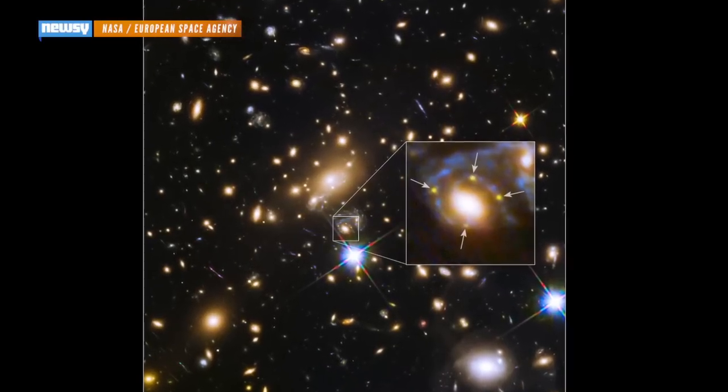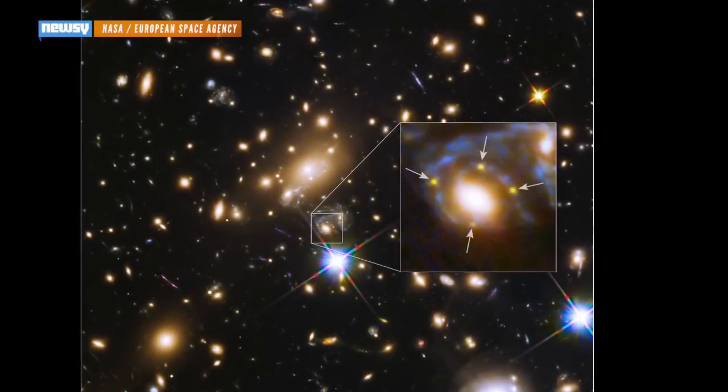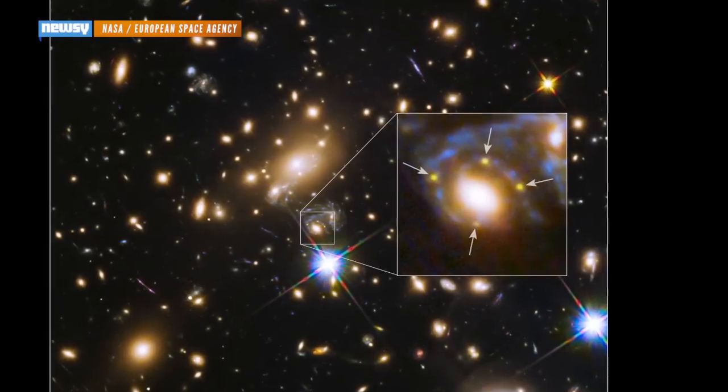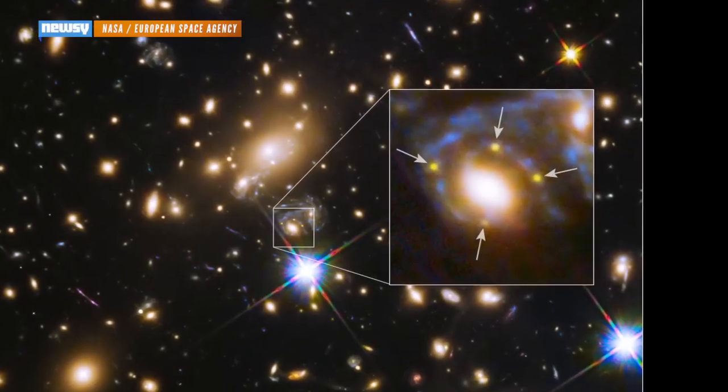Astronomers have compared it to finding a four-leaf clover. Images from the Hubble Space Telescope show a distant galaxy framed by four images of the same supernova—a kind of mirage that's been dubbed an Einstein cross.